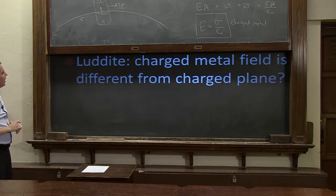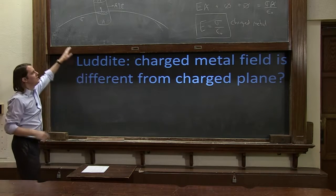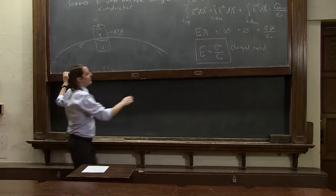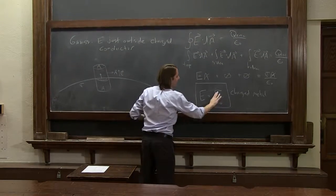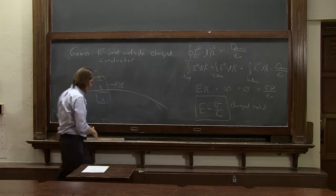So he's writing in really big font. Luddite, which is an interesting name for someone taking a MOOC, says that the charged metal field is different from the charged plane. Why do we get sigma over 2 epsilon naught for a charged plane and sigma over epsilon naught for a metal?